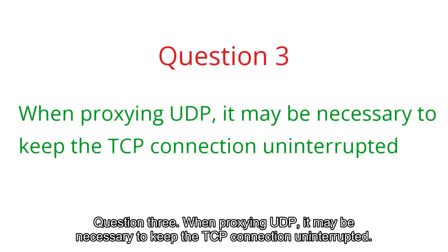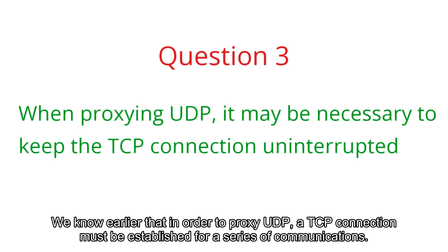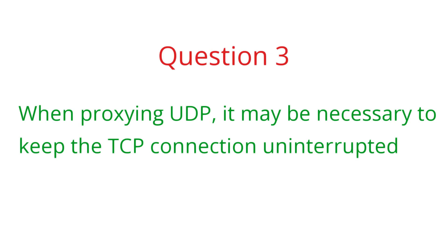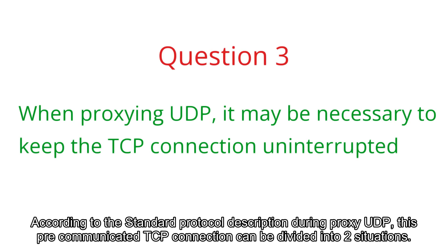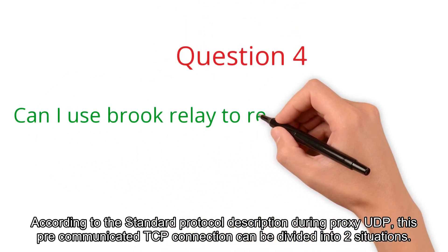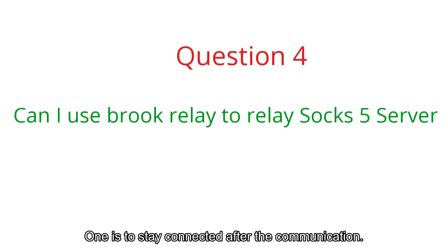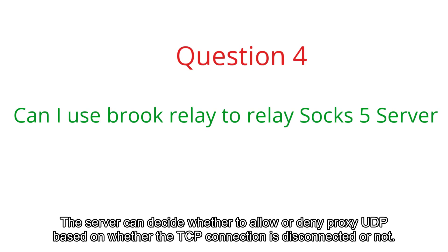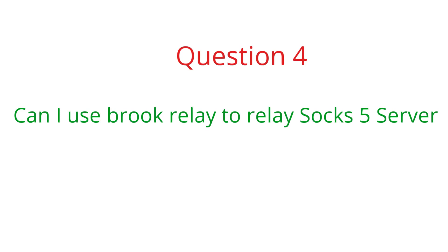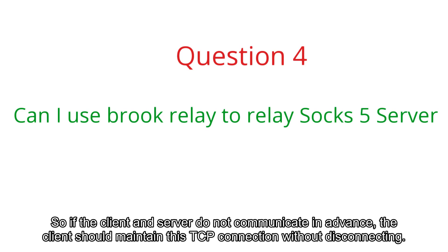Question 3: when proxying UDP, it may be necessary to keep the TCP connection uninterrupted. In order to proxy UDP, a TCP connection must first be established. According to the standard protocol, during UDP proxying this pre-communicated TCP connection can either be disconnected after communication, or stay connected. The server can decide whether to allow or deny UDP proxying based on whether the TCP connection is disconnected. So if the client and server have not communicated in advance, the client should maintain this TCP connection without disconnecting.